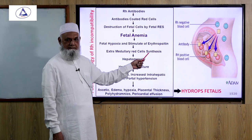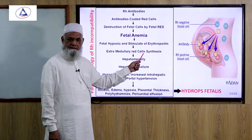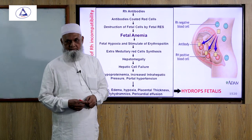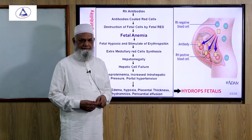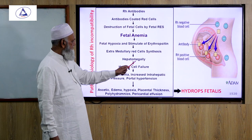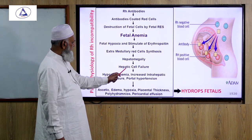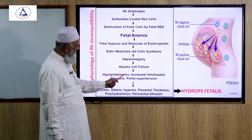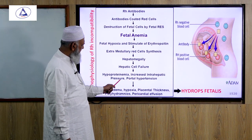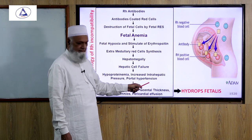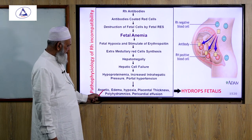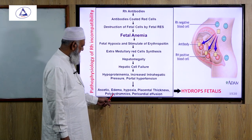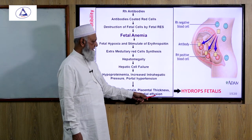Erythropoietin stimulates extramedullary red cell synthesis in the spleen and liver (myeloid metaplasia), causing hepatomegaly and then hepatic failure. Hepatic failure leads to hypoproteinemia, increased intrahepatic pressure, portal hypertension, ascites, edema, hypoxia, placental thickness, polyhydramnios, and pericardial effusion.